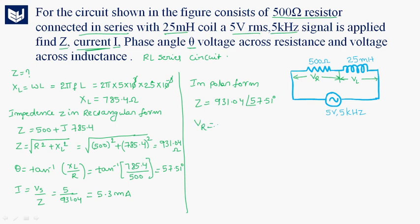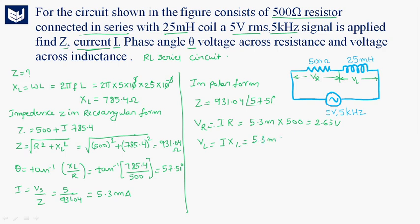VR is simply I into R: the current is 5.3 milliamperes into resistance 500 ohms, which equals 2.65 volts. Similarly, VL equals I into XL: 5.3 milliamperes into 785.4 ohms, which equals 4.16 volts. That is the voltage across the inductor, and 2.65 volts is across the resistance.